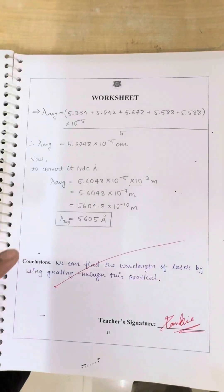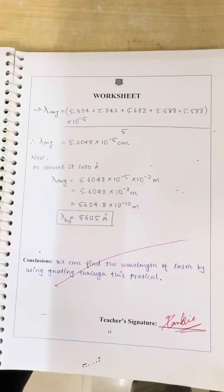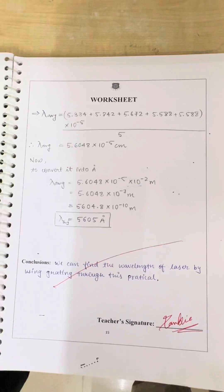So finally, we concluded that we can find the wavelength of the laser by using diffraction grating.